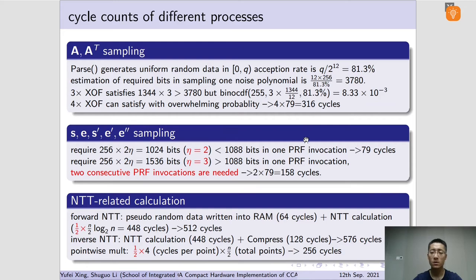One PRF invocation is needed to generate one noise polynomial when eta equals 2, and two PRF invocations are needed when eta equals 3. In an MLWE-based protocol, the multiplication between public matrix and noise polynomial vector as well as between two polynomial vectors can be divided into small polynomial multiplications naturally. Each 256 term polynomial would be transformed to point value representation.